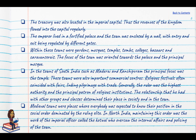When you look at Shah Jahanabad in present-day Delhi, you have the Red Fort and the Jama Masjid as two focal points. In South Indian towns such as Madurai and Kanchipuram, the principal focus was the temple, as they were primarily temple towns — though these were also important centres of commerce and handicrafts, especially silk and cotton weaving. Religious festivals often coincided with fairs, linking pilgrimage with trade, and the ruler was the highest authority and principal patron of religious institutions.